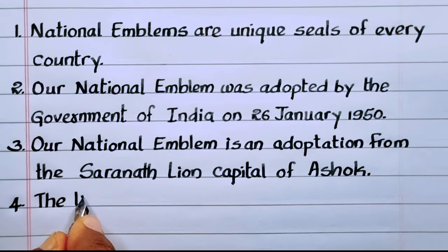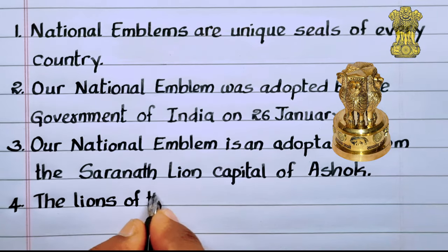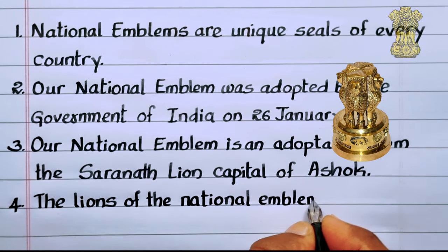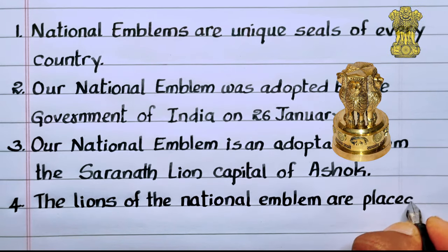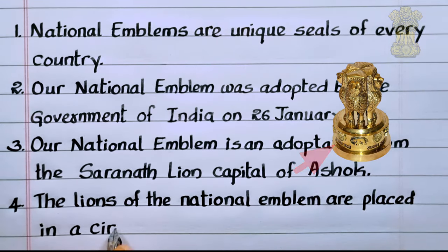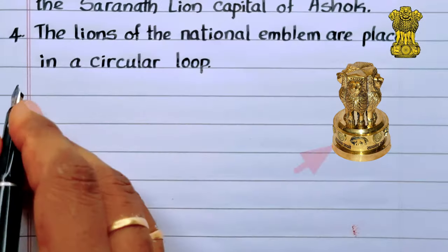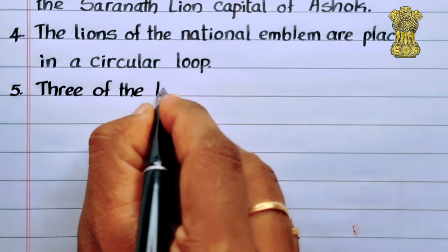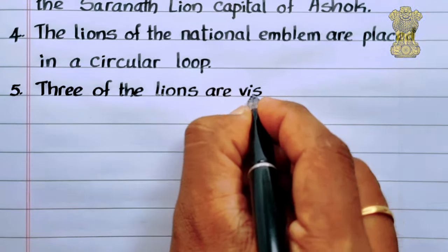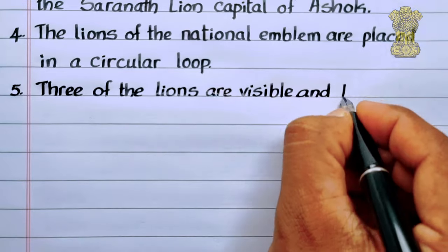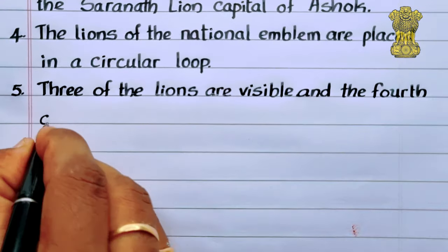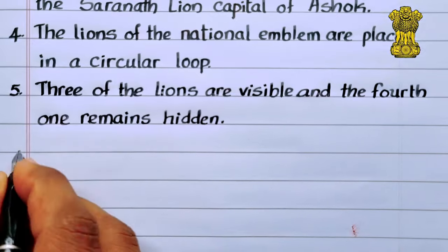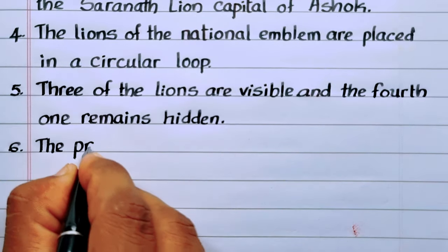Fourth point: the lions of the national emblem are placed in a circular loop. Fifth point: three of the lions are visible and the fourth one remains hidden.